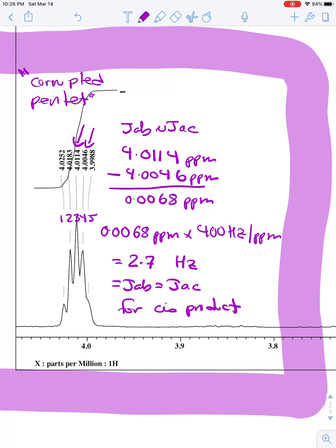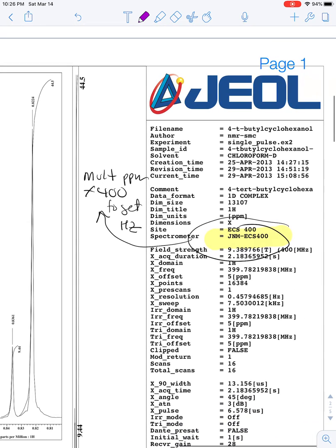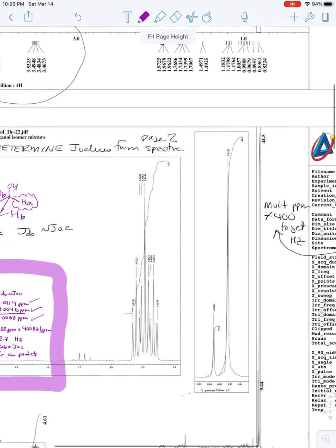And so what we're going to do is we're going to pick those two numbers off the spectrum and subtract the two signal positions in parts per million. That gives us 0.068 parts per million. Then we need to convert it into hertz, and we're going to use the conversion 400 hertz per part per million. And the reason we do that is because the operating frequency of the spectrometer is 400 megahertz.